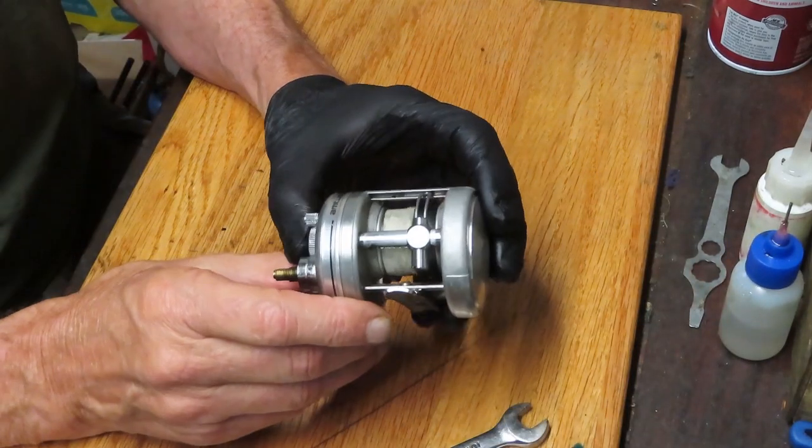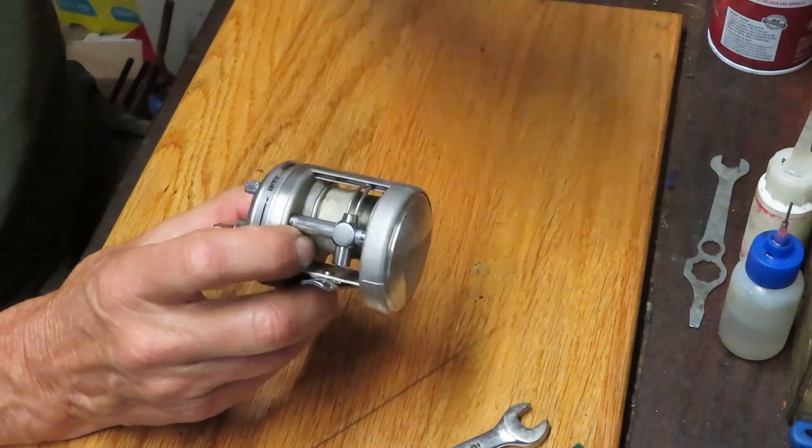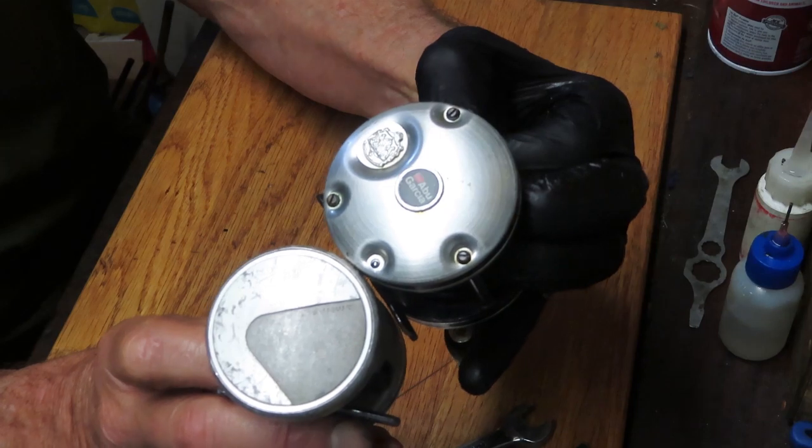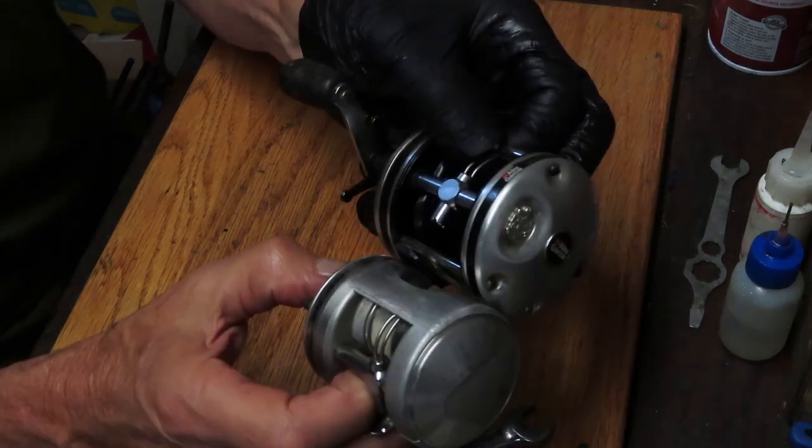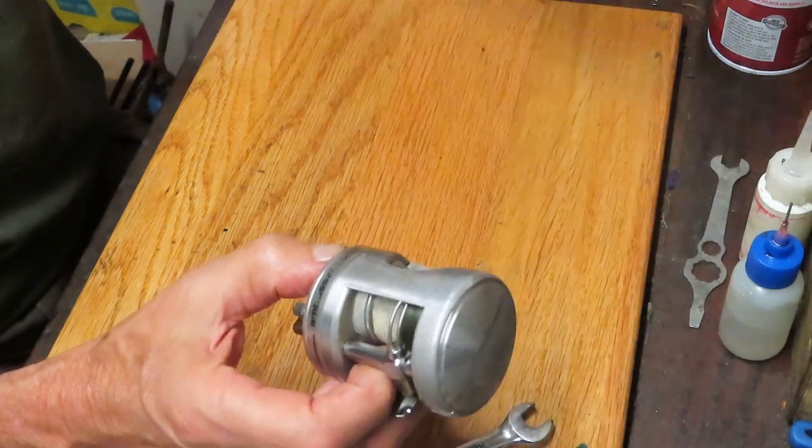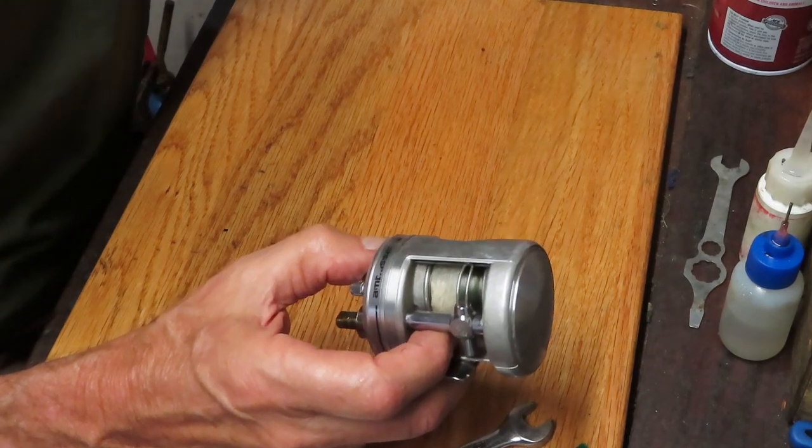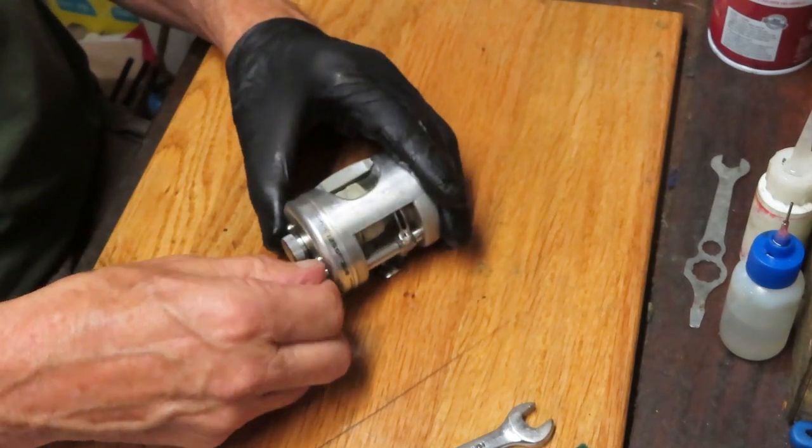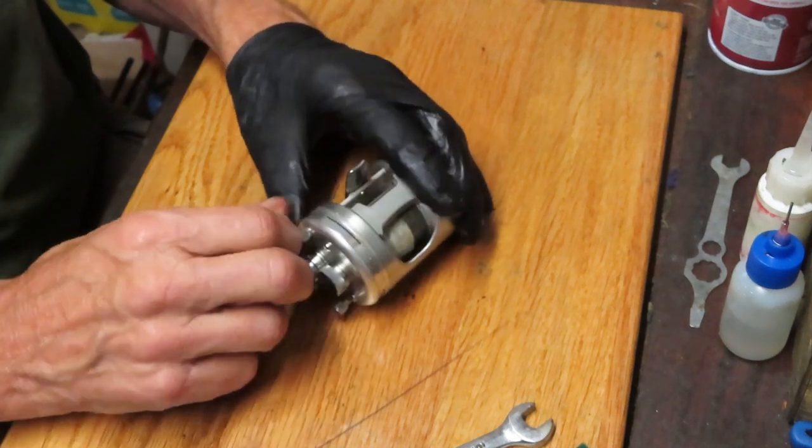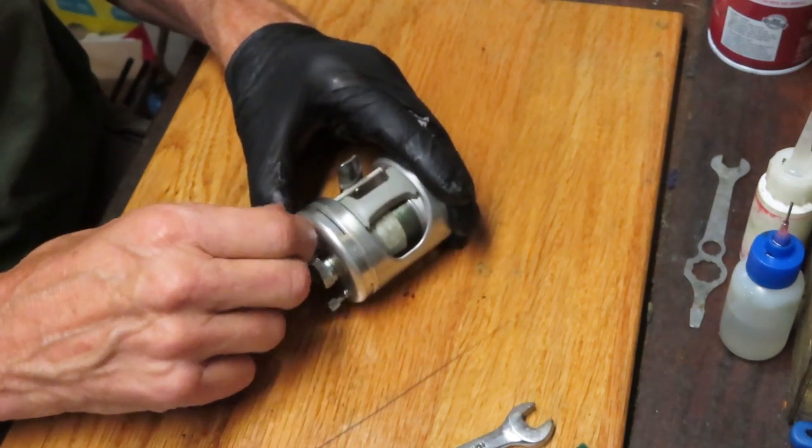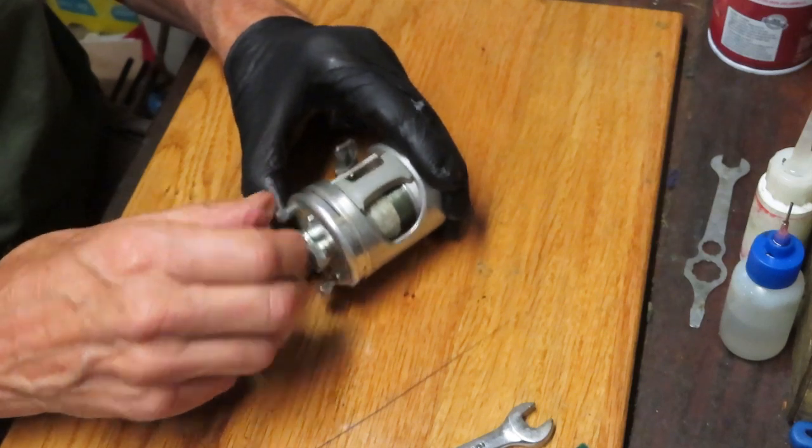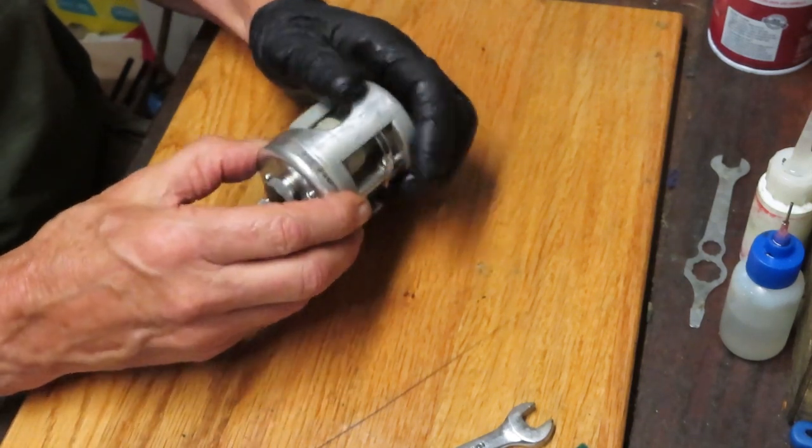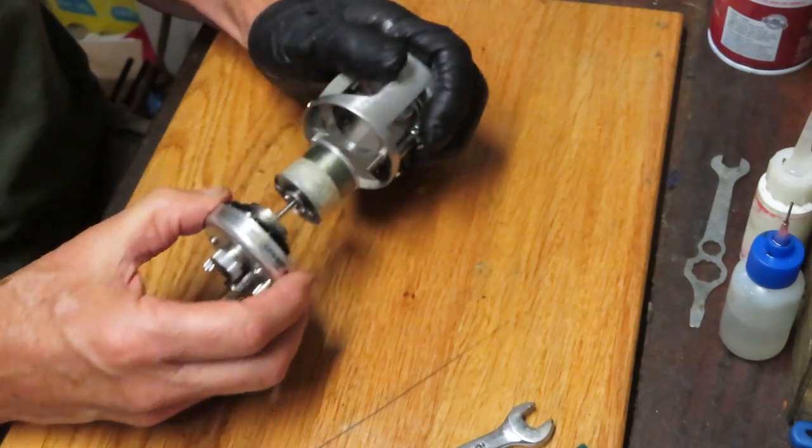And that will be our first view into what might or might not be going on here. So these are a little bit smaller in profile than the more traditional Ambassadors. You can see that it's a smaller diameter to the frame, but the frame is about the same size. These reels are great for inshore fishing, for bassing, nice little casting reels. Let's see if we can get that off. We can.